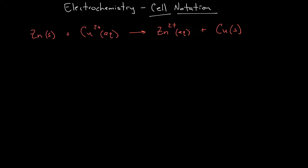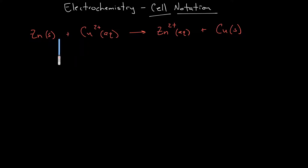In this video we're going to look at electrochemical cell notation. This will teach you how to understand it and how to write it based on a chemical equation. The example here is going to be for zinc and copper, but the same type of theory is going to work for any type of electrochemical reaction.